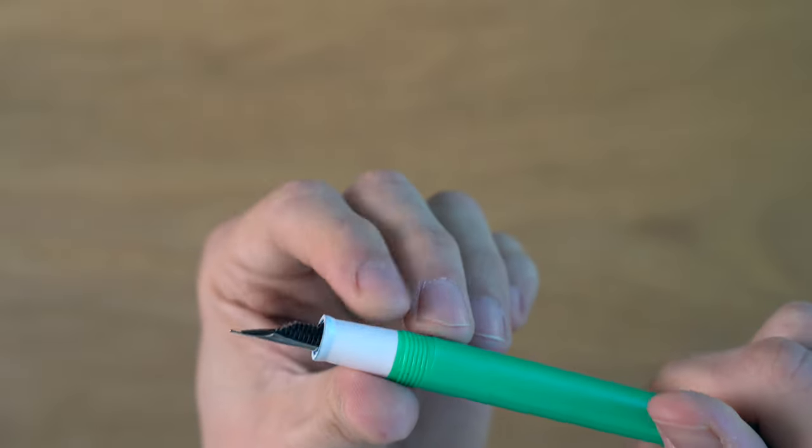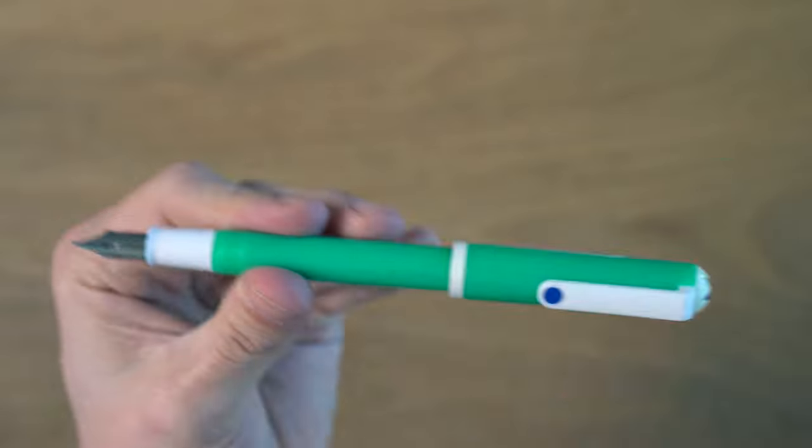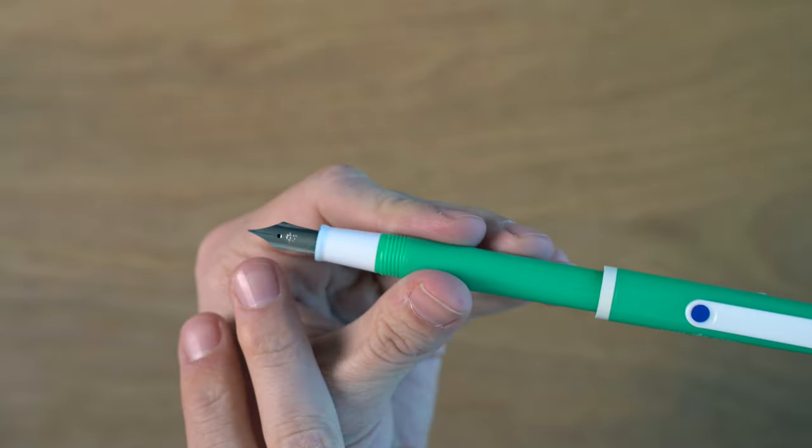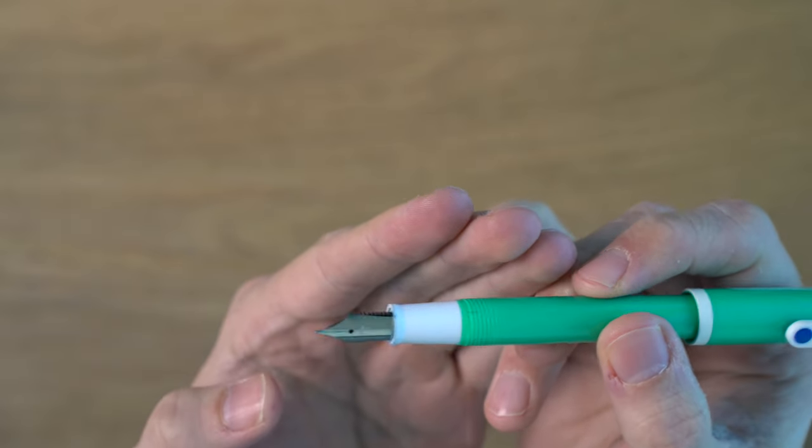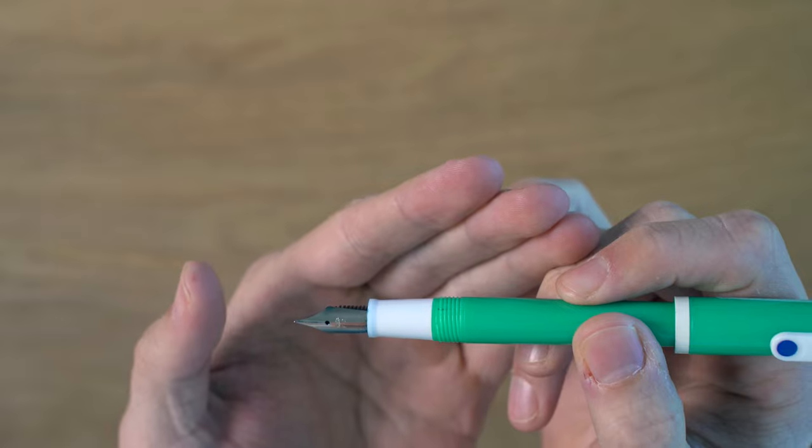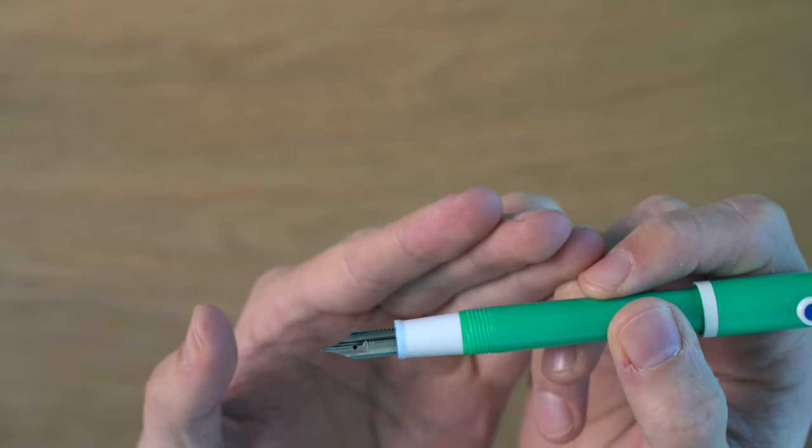Just basic plastic feed, steel nib. Posts nicely onto the back of the body here. These nibs, I think if you look at reviews for these, they were not always reliably good. Some people complain about them being scratchy or not writing well basically out of the box. Issues with flow, that kind of thing.